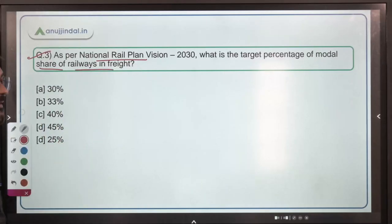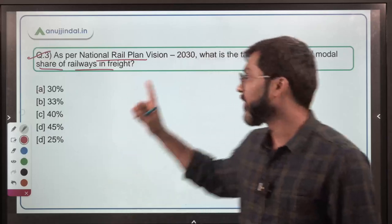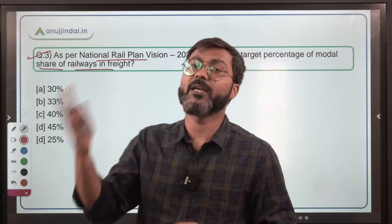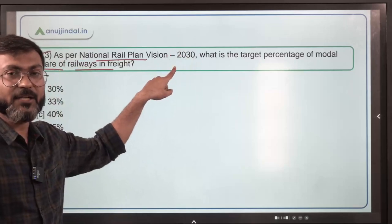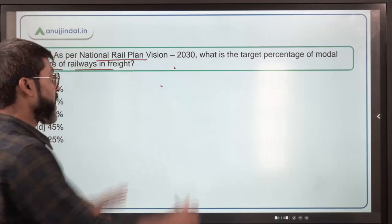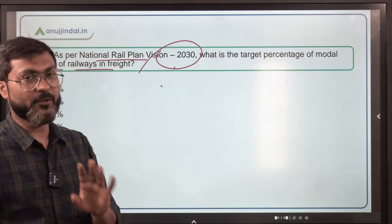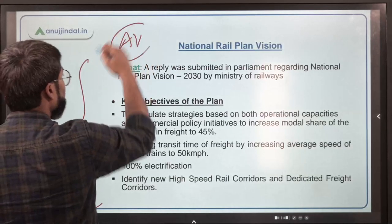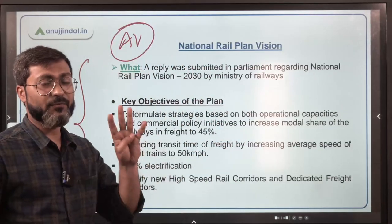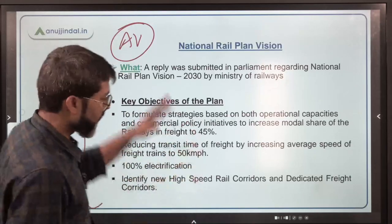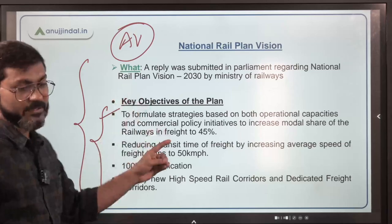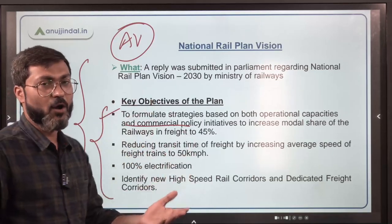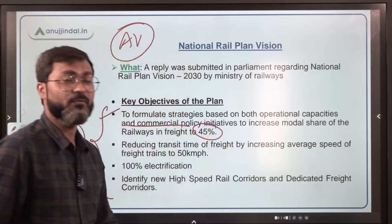Moving ahead to question number three: as per National Rail Plan Vision 2030, what is the target percentage of modal share of railways in freight? This is the National Rail Plan Vision 2030, and there are four most important points in this plan. Number one: to formulate strategies based on both operational capacities and commercial policy initiatives to increase the percentage share of railways in freight to 45%.